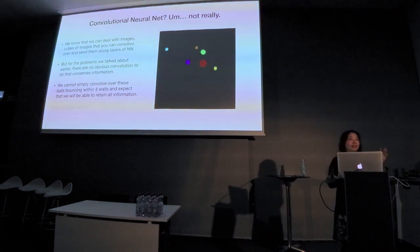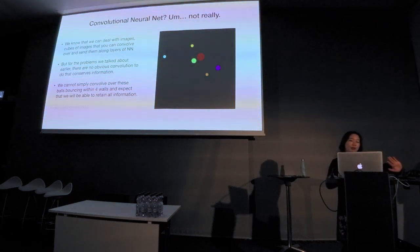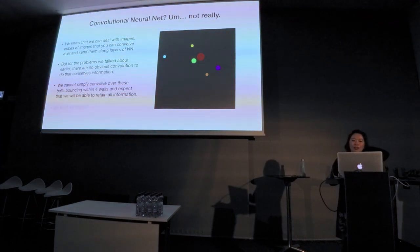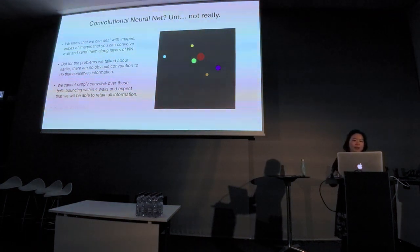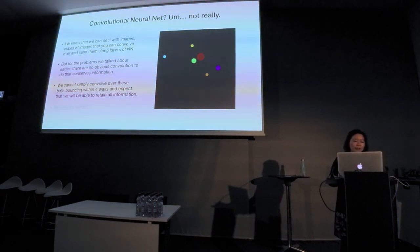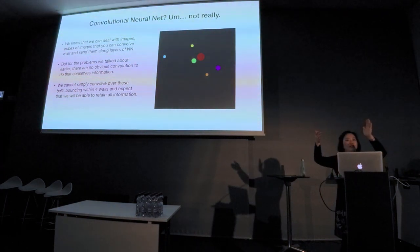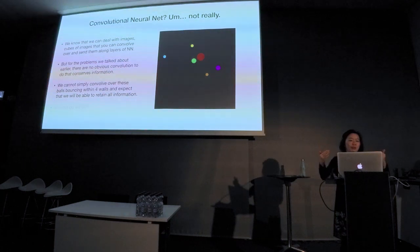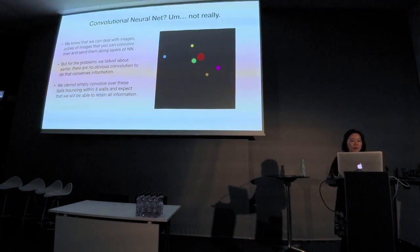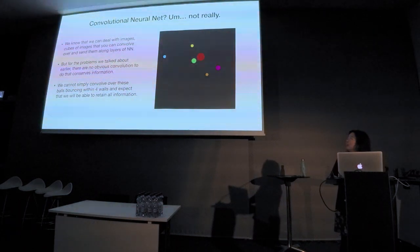Can we use a convolutional net, as Schmidt and Lipson did in 2009? Not really. It turns out it's a lot easier to do it with something else. We know we can deal with images or cubes of images with 3D convolution through layers of neural nets. But there's no obvious convolution that conserves information because you're always chopping into grids and pixels — always losing some information. With a simple convolutional net on pixel images, we cannot retain all the information for balls bouncing within four walls or a planetary system.